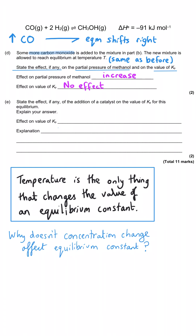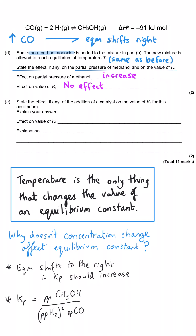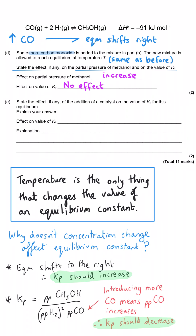The more detailed explanation is that the increase in Kp suggested by more methanol being produced is precisely offset by the increase in carbon monoxide's partial pressure on the bottom of the fraction — which would decrease Kp. Because increasing a value on the bottom of a fraction makes it smaller, these two effects cancel out exactly. Therefore, only temperature affects the value of Kp or any equilibrium constant, because it shifts the equilibrium without any compensating adjustment in the expression.